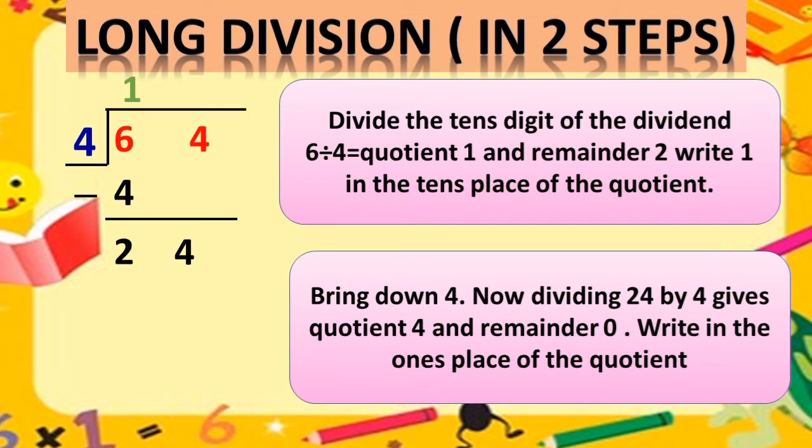4 ones is 4, 4 twos are 8, 4 threes are 12, 4 fours are 16, 4 fives are 20, and 4 sixes are 24. Very good.